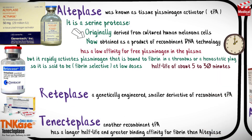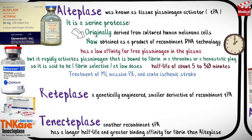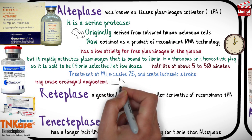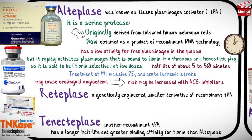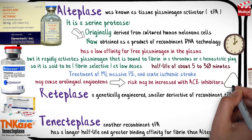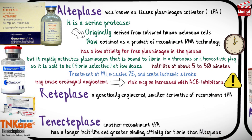Alteplase is approved for the treatment of myocardial infarction, massive pulmonary embolism, and acute ischemic stroke. It may cause orolingual angioedema, and this risk may be increased when combined with angiotensin-converting enzyme inhibitors.